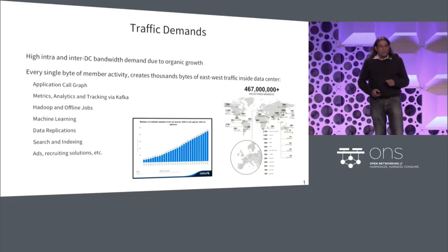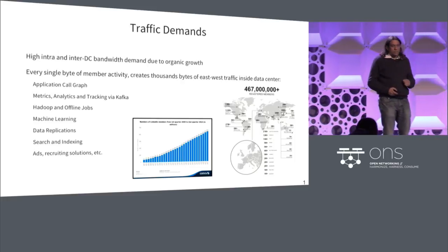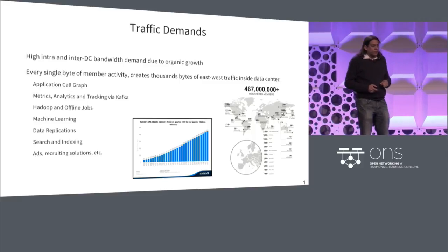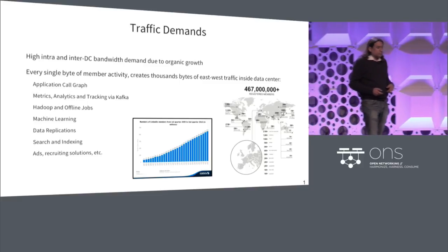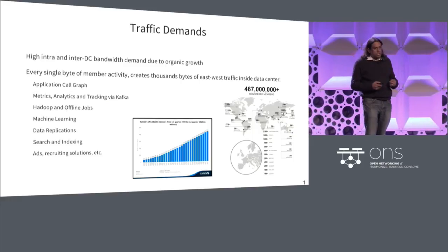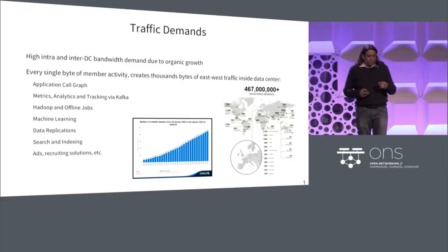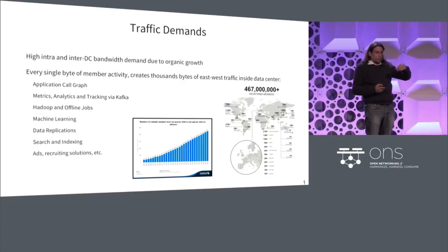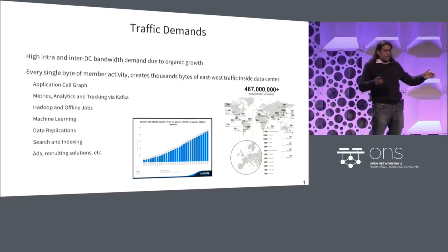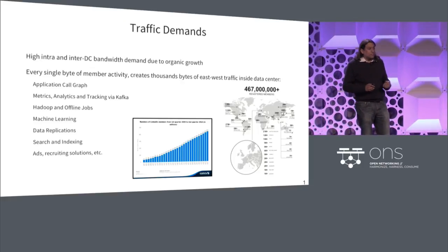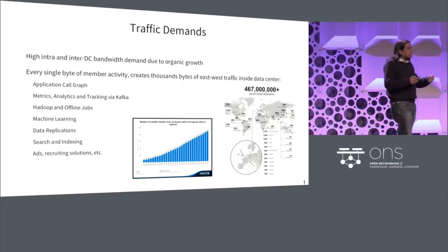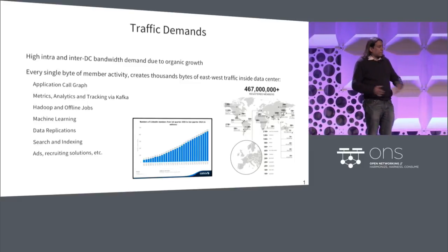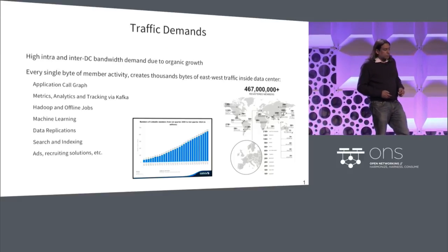All of us who run data centers are always intrinsically looking at traffic. Inside LinkedIn data centers, the traffic demands over time have grown tremendously. What's interesting about content companies like us is that when you have one byte of data that comes from north-south, from the internet, inside the data center it spans 10x, because the way the applications are built is an enormous call graph that spans across data centers, creating an enormous amount of traffic.